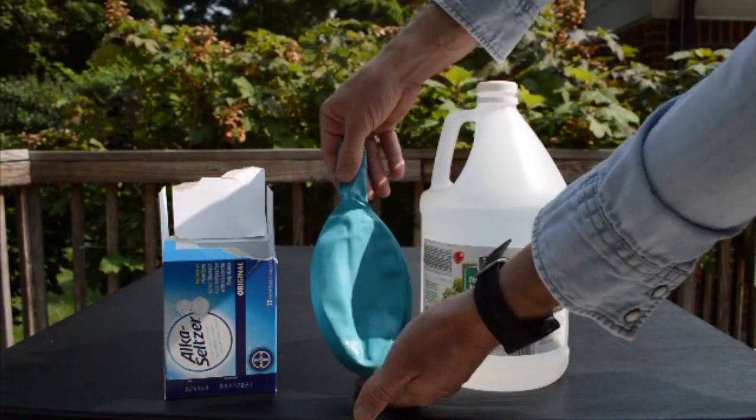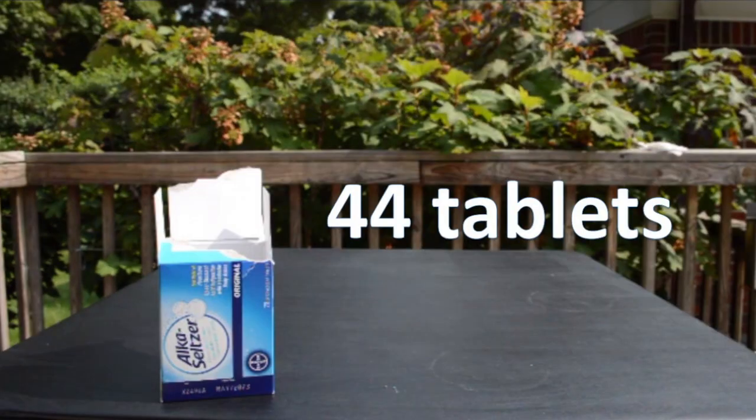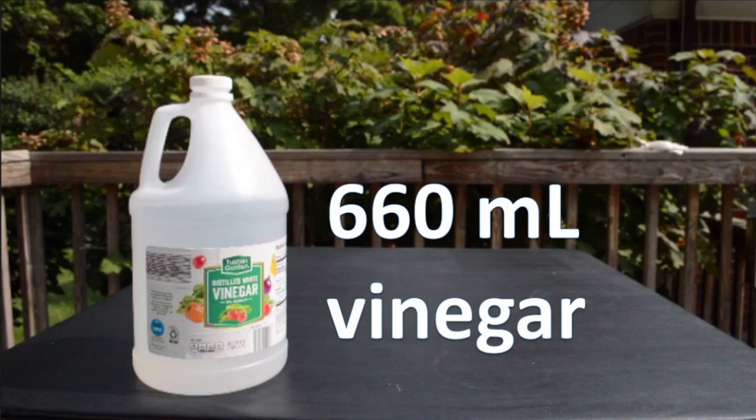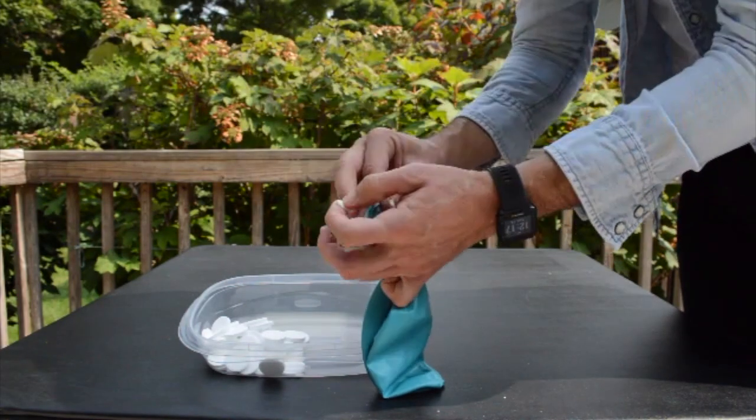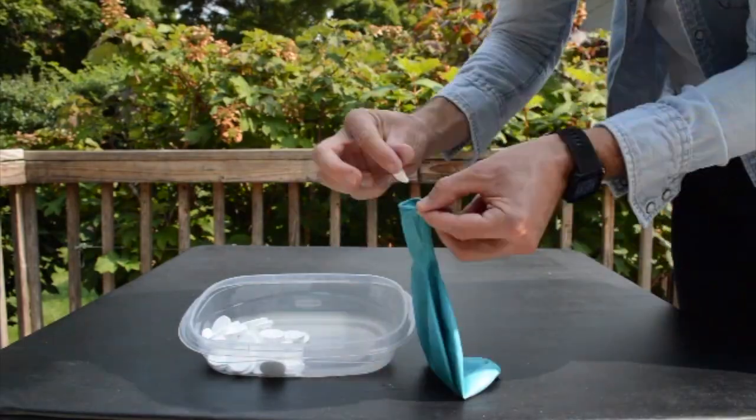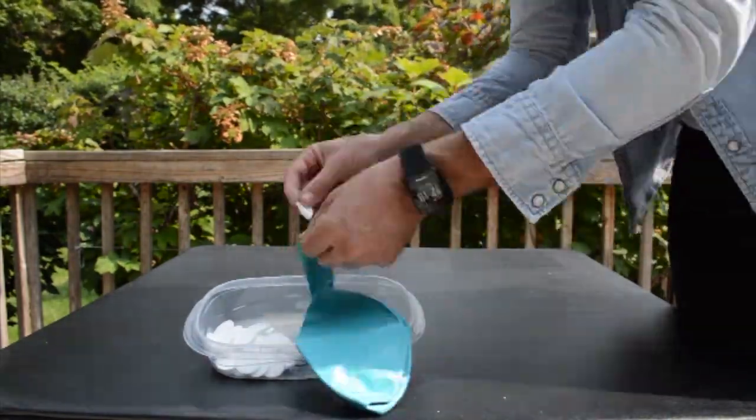To make a mole of CO2, we'll need 44 Alka-Seltzer tablets and 660 milliliters of vinegar. First, we'll break up the tablets so that they'll fit inside the balloon.